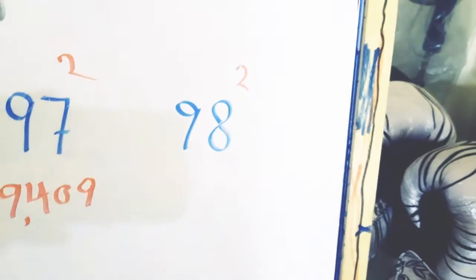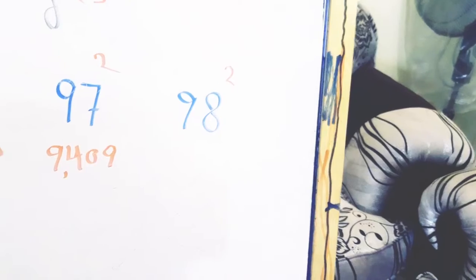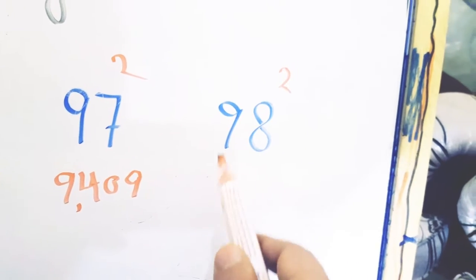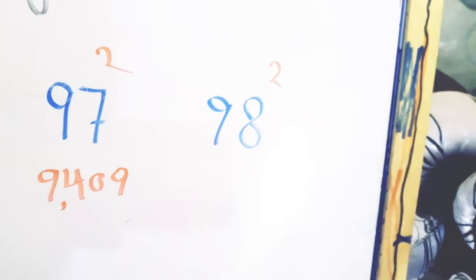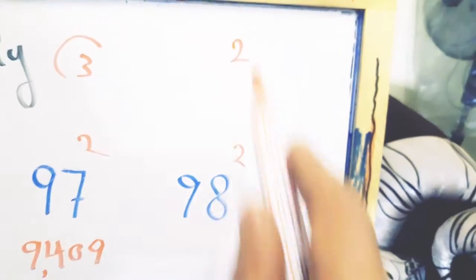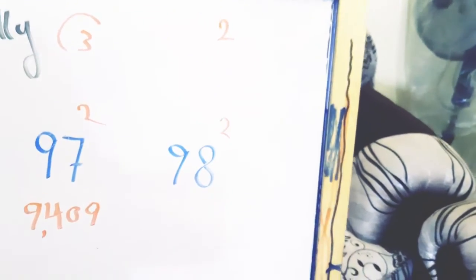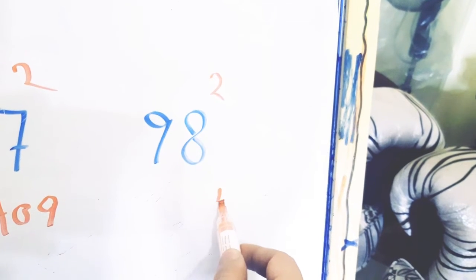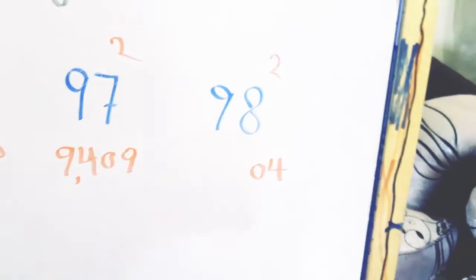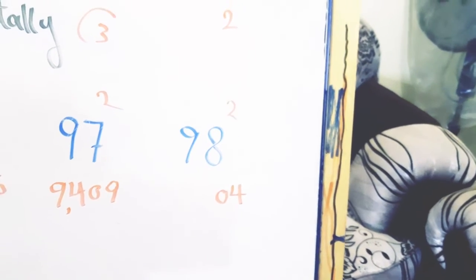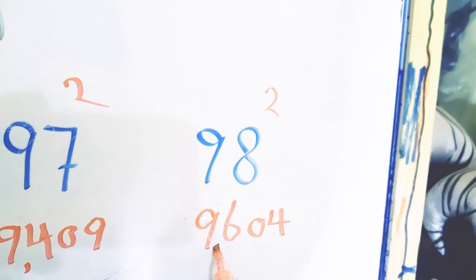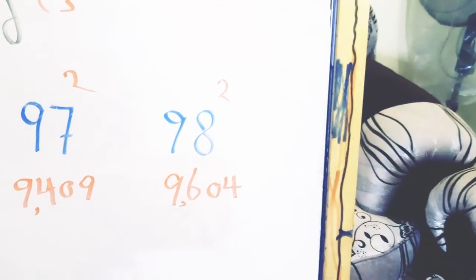We want to square 98. As you know, 98 is located between 90 and 100. The first step is subtracting 98 from 100, which gives us 2. We multiply 2 by 2 to get 4. Since 4 is a single digit, we must add a 0 to the left side to make it 04. Then we subtract 2 from 98 to get 96. So the answer is 9,604.